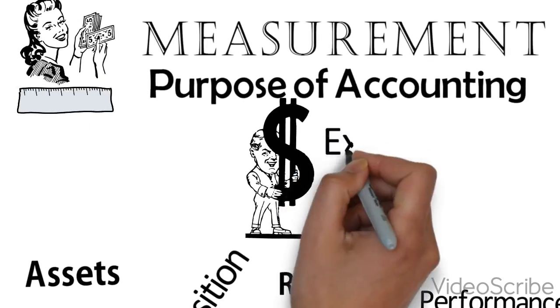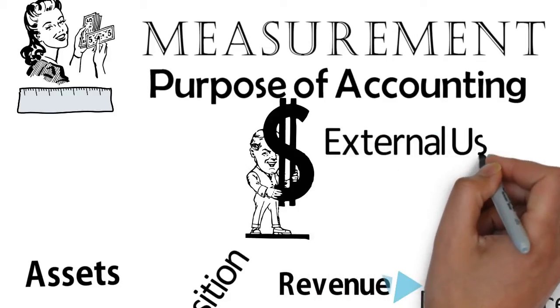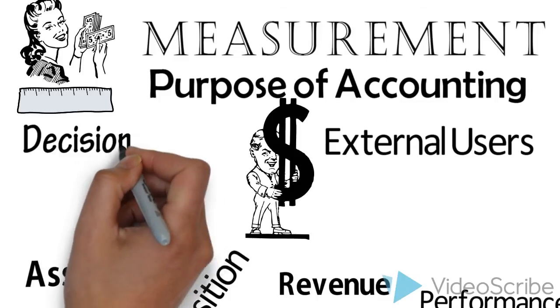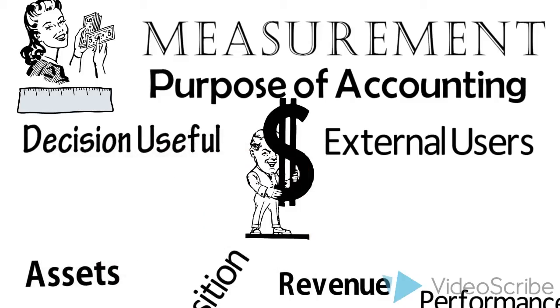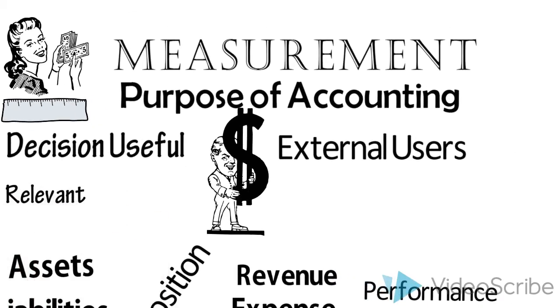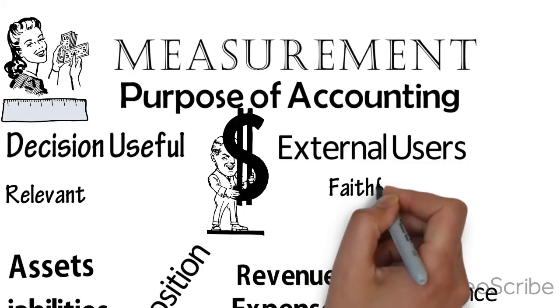So users are external and they need information to compare the financial performance of organizations. But what qualitative characteristics then are necessary for information to achieve that objective?